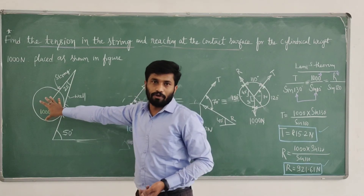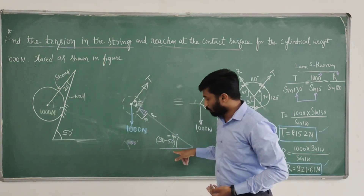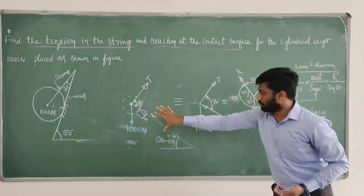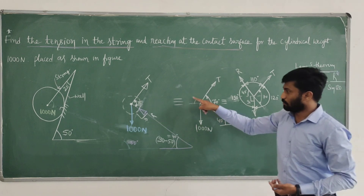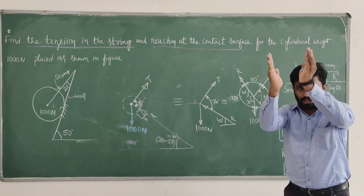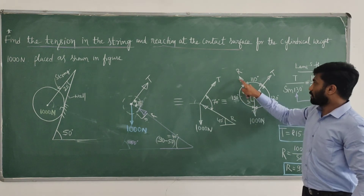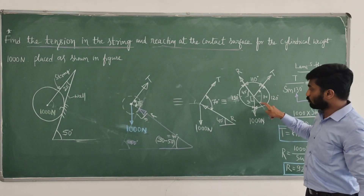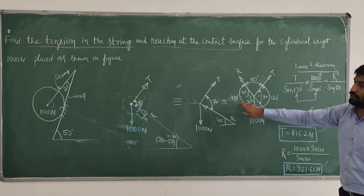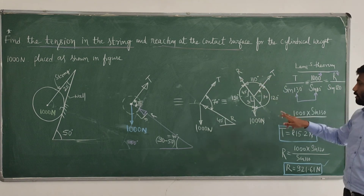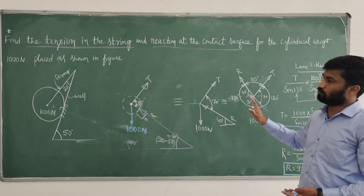1000 Newton is the weight of the sphere; weight always acts towards gravity. In the string there is a tension. Draw a perpendicular to determine the angle of inclination of the reaction as well as the angle between T and R. The angle between T and R is 70 and the angle of R is 40. By principle of transmissibility, transmit the force to apply Lamy's theorem with three concurrent forces. 40 plus 90 gives 130; 180 minus 70 gives 110; 360 minus 110 minus 130 gives 120. Apply Lamy's theorem: T divided by sin 130, R divided by sin 120, 1000 divided by sin 110. I hope you are understanding these simple basic steps. Thank you.